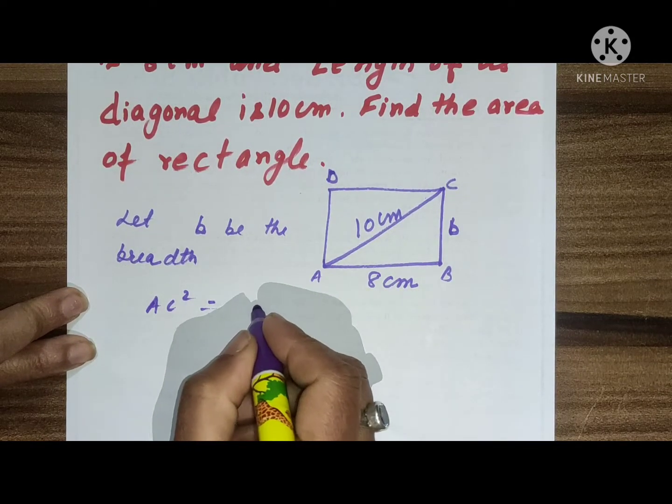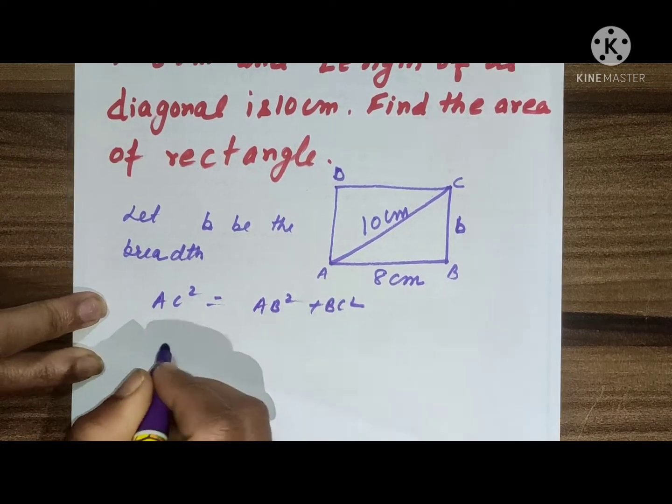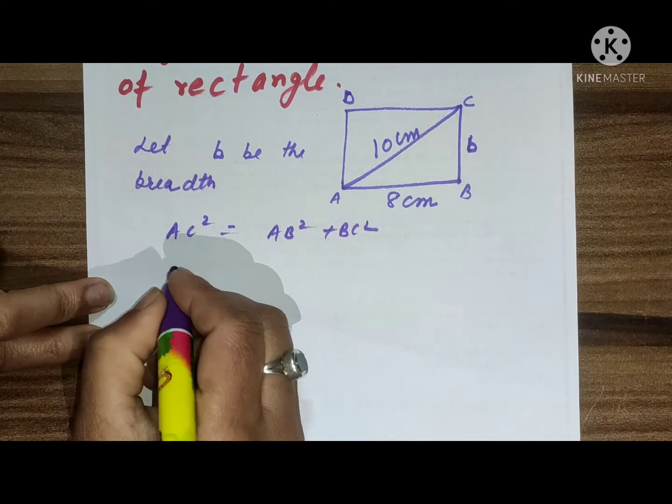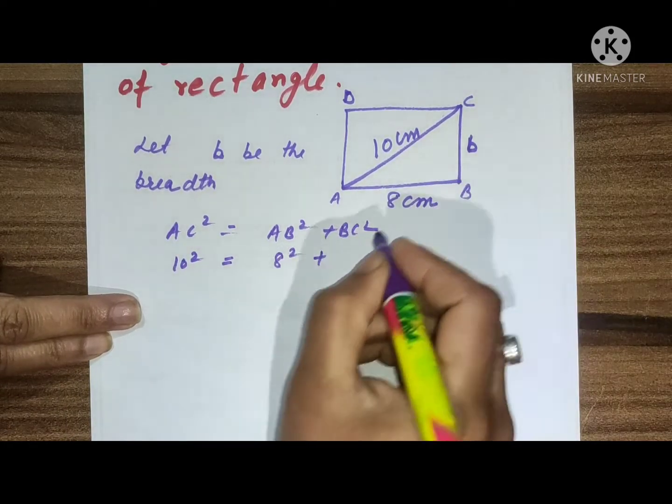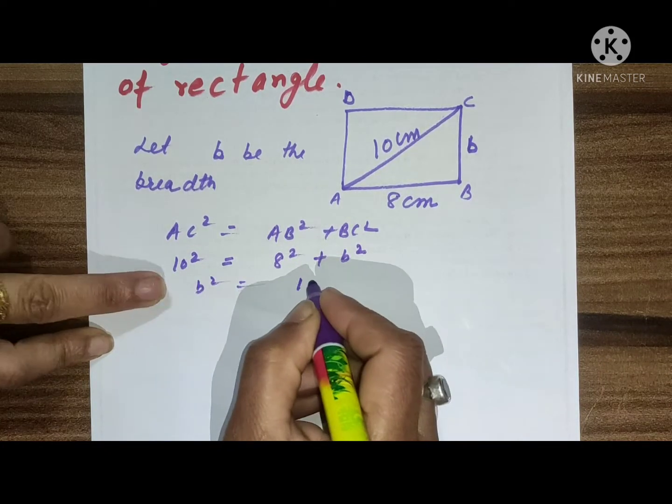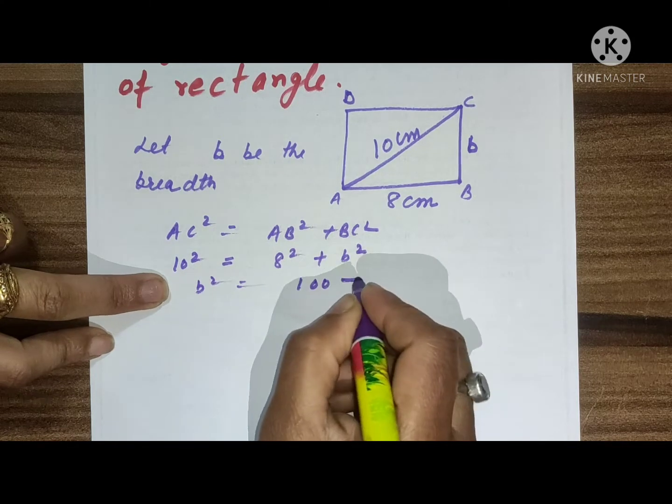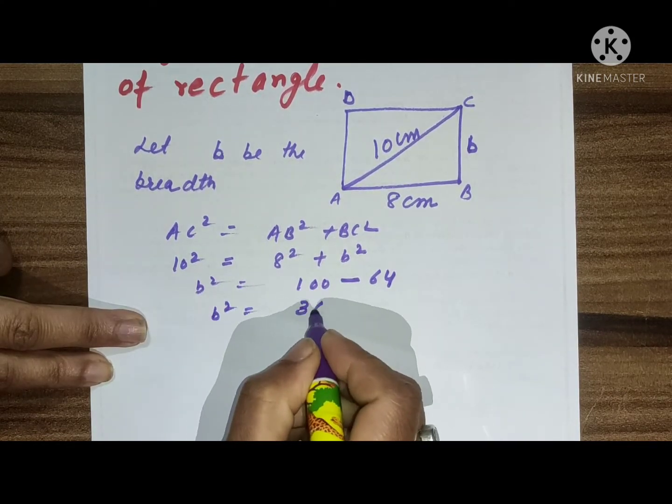What is AC? AC is 10. What is AB? AB is 8. So AC² = 10², AB² = 8² plus BC² is b². So b² = 10² - 8², which is 100 - 64, which equals 36.